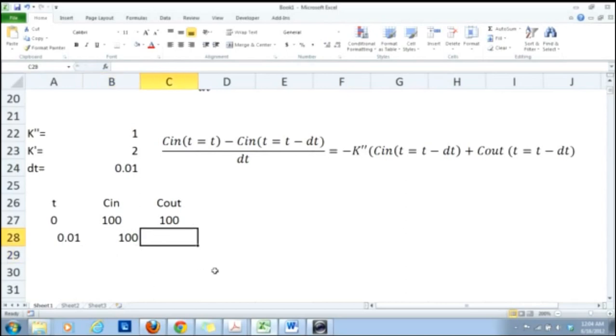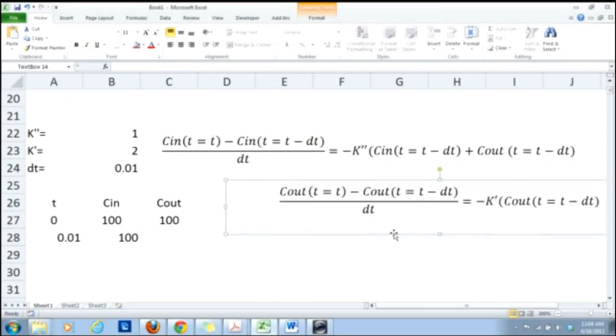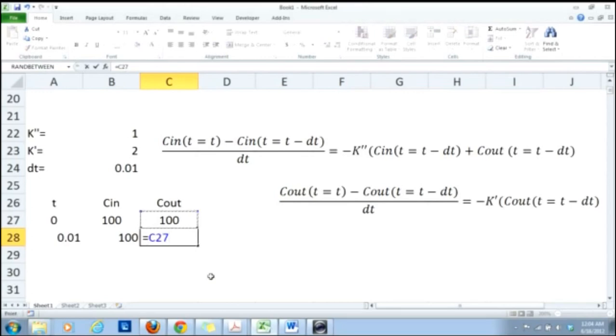And now here C_out, let me grab the equations here. And I say C_out is equal to C_out at t minus dt and then minus dt, dt which is constant. So I put dollar sign here and then into k'. K' is constant so I put dollar sign here and then into C_out. So C_out is not constant so it will be C_out here. So now this is what I have.